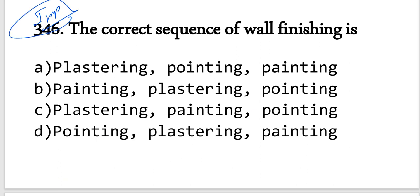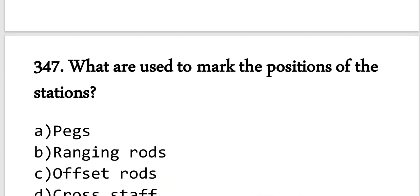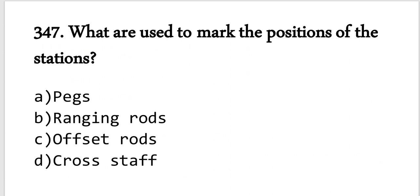Question number 345: The correct sequence of wall finishing is: pointing first, then plastering, then painting. Option D is correct.